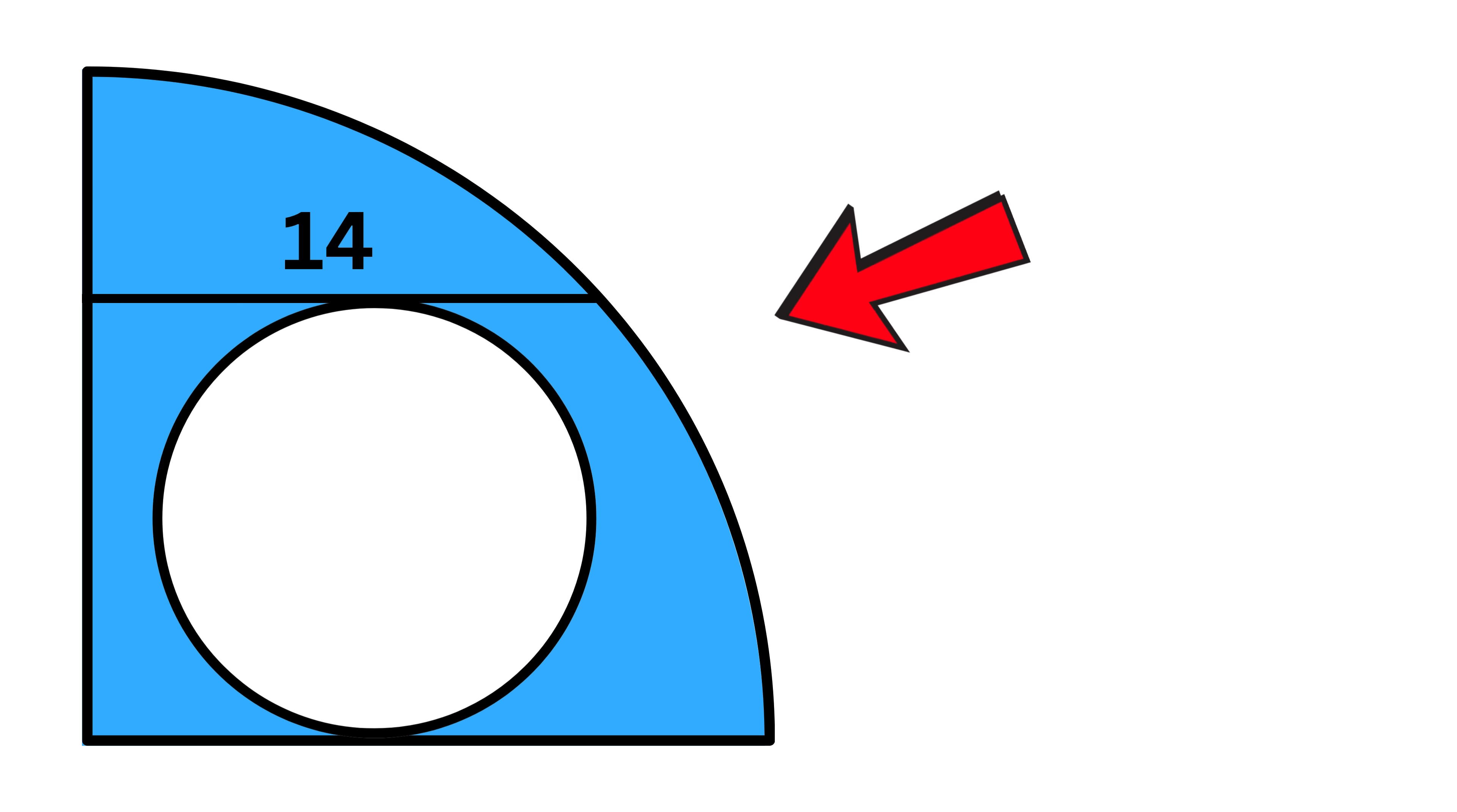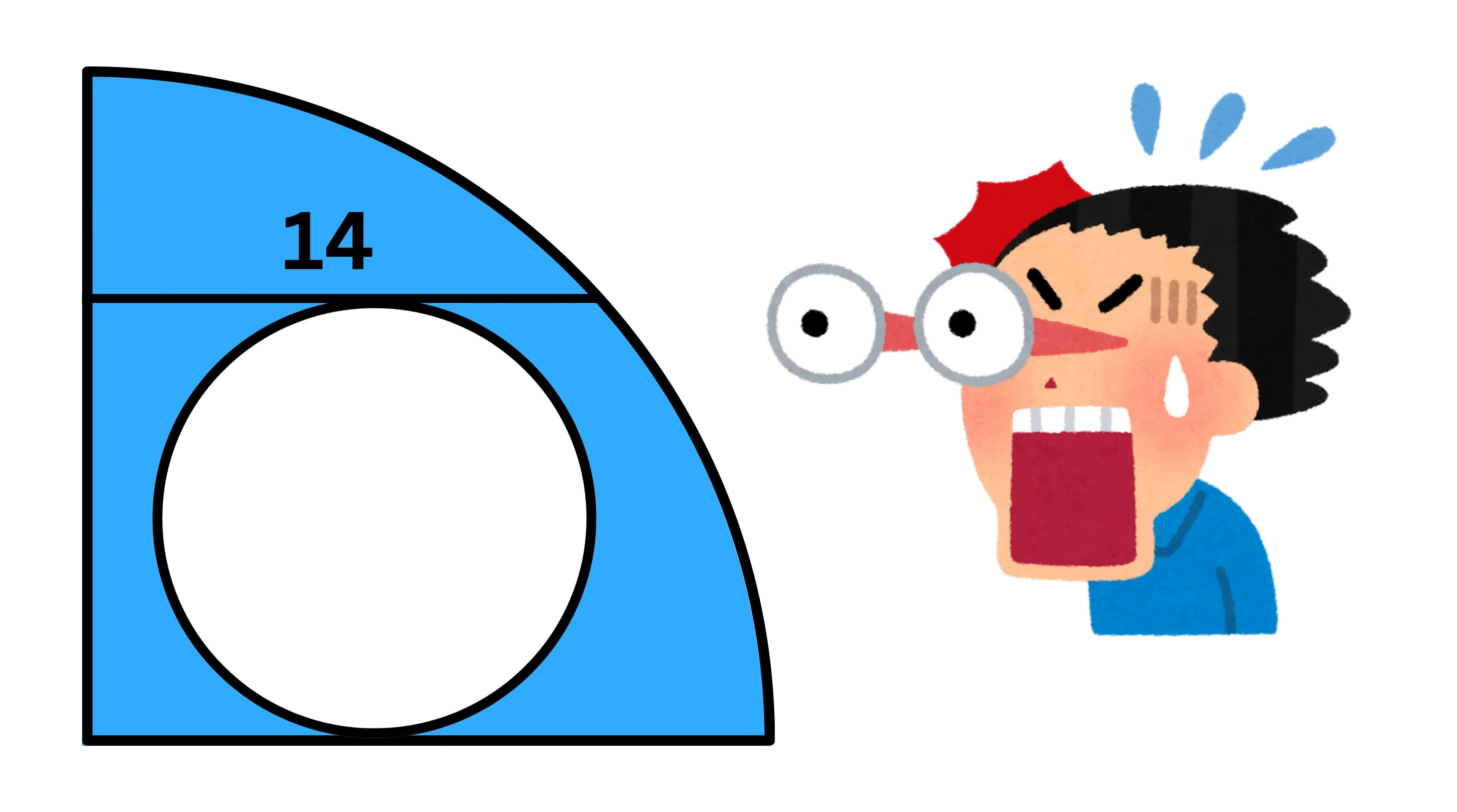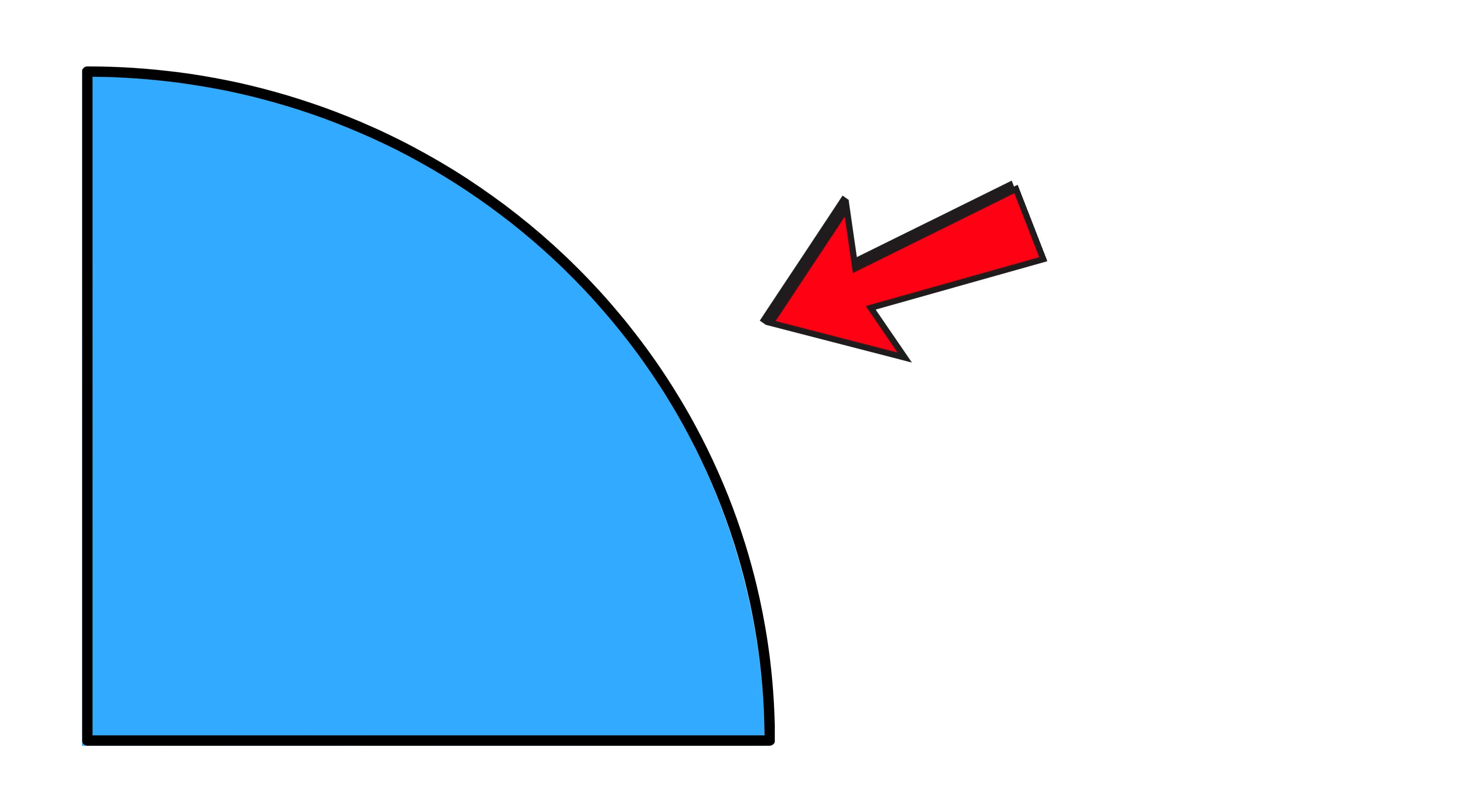This question will make your eyes pop out of your head in surprise. We are given a quarter circle, which simply means one fourth part of a full circle. Now inside this shape there is a full circle placed such that this full circle is touching this radius of the quarter circle.